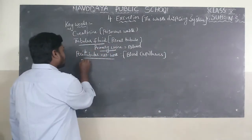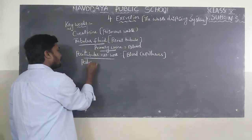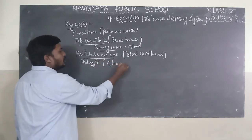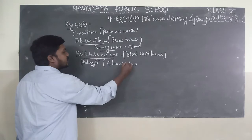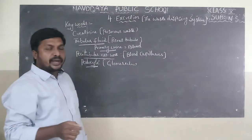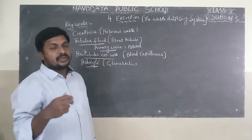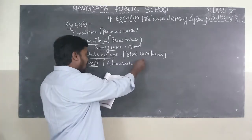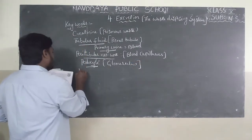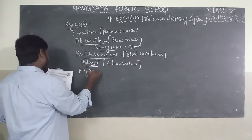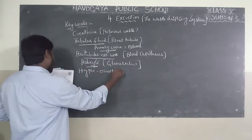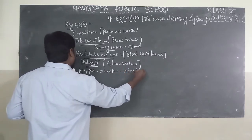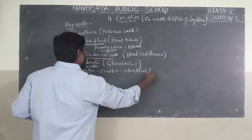Next keyword is podocytes. The cells present in the glomerulus are known as podocytes. Blood is filtered in the podocytes of the glomerulus.